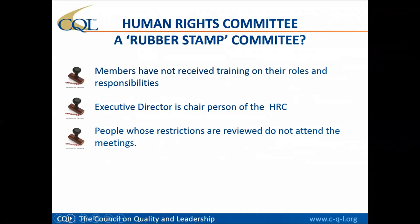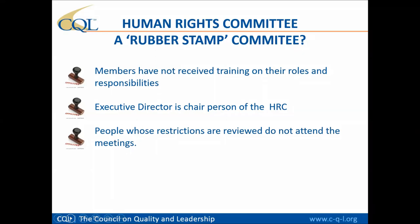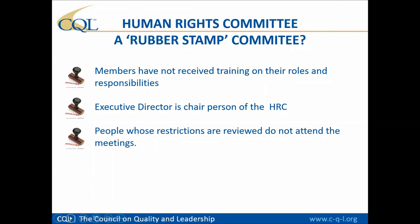When we talk about a rubber stamp committee, what are we referring to? Based on our experience with accreditation reviews using the basic assurances, or in our conversations during Personal Outcome Measures training, we find some typical characteristics of committees that tend to rubber-stamp. These include where members haven't received training on their roles or responsibilities — they really don't know what they're doing. Another is where the executive director is the chairperson, when really the human rights committee is serving as an advisor to the executive director — there's an inherent conflict of interest there.